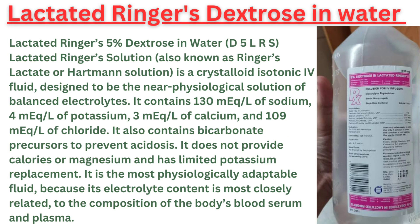Lactated Ringer's solution, also known as Ringer's lactate or Hartmann's solution, is a crystalloid isotonic IV fluid designed to be a near physiological solution of balanced electrolytes. It contains 130 mEq per liter of sodium, 4 mEq per liter of potassium, 3 mEq per liter of calcium, and 109 mEq per liter of chloride. It also contains bicarbonate precursors to prevent acidosis. It does not provide calories or magnesium and has limited potassium replacement. It is the most physiologically adaptable fluid because its electrolyte content is most closely related to the composition of the body's blood serum and plasma.